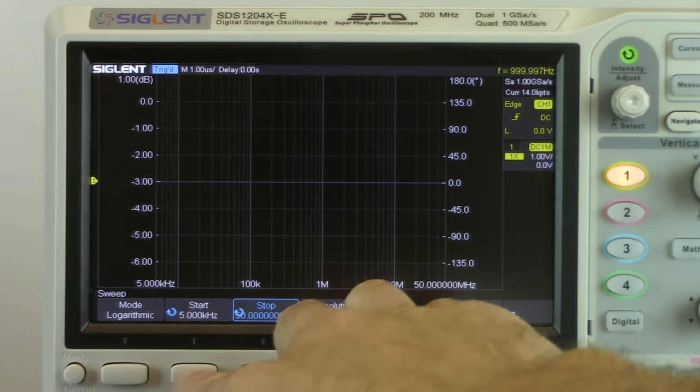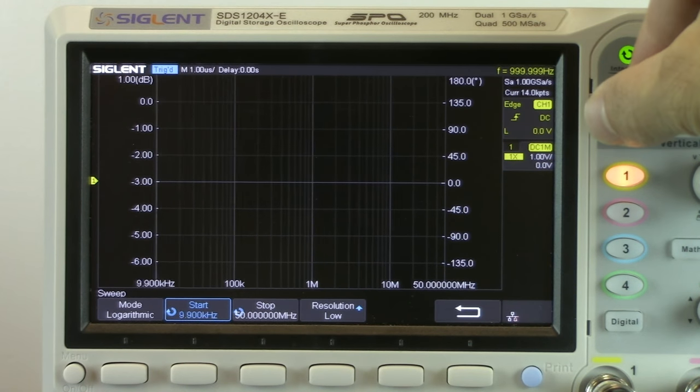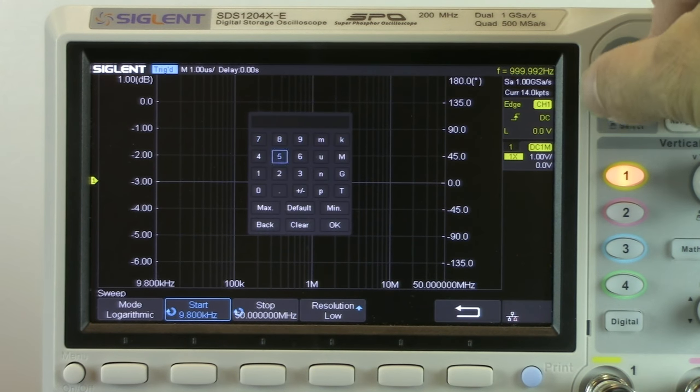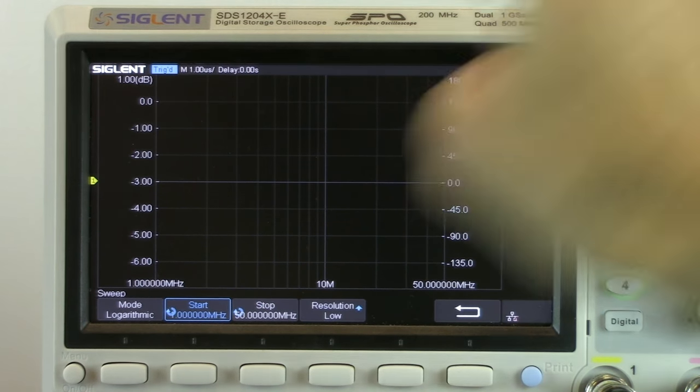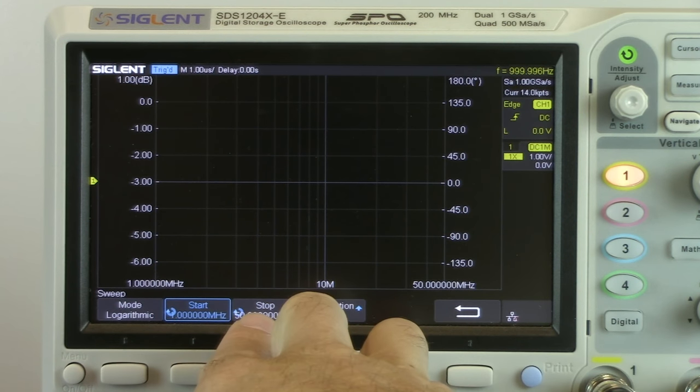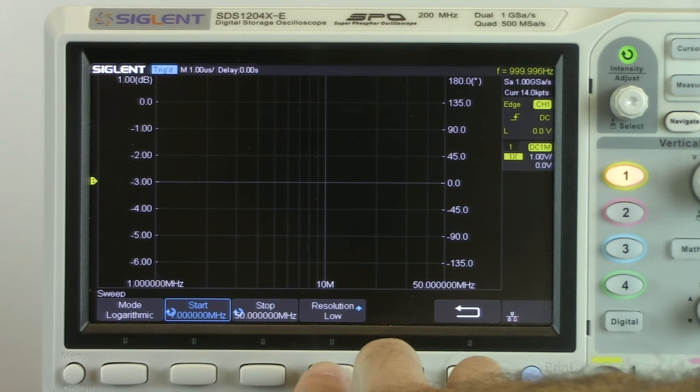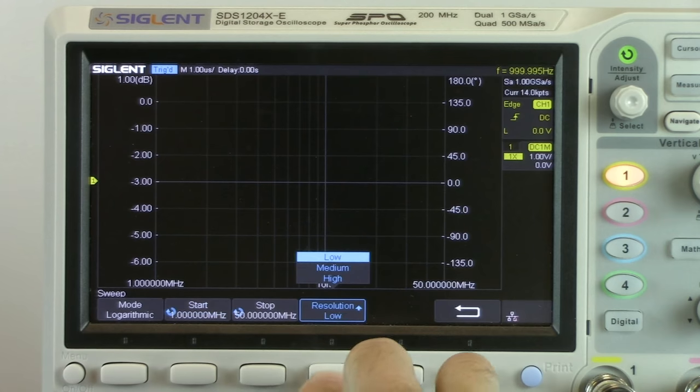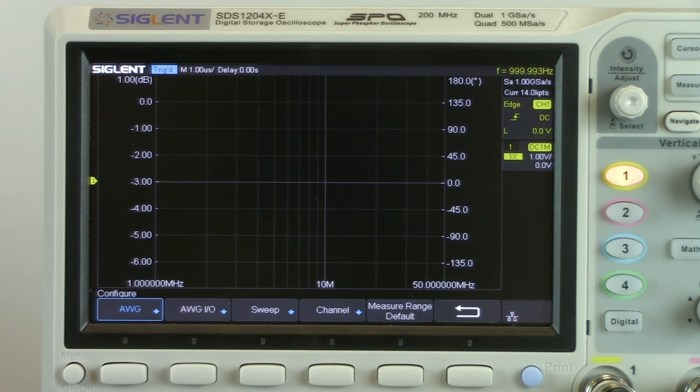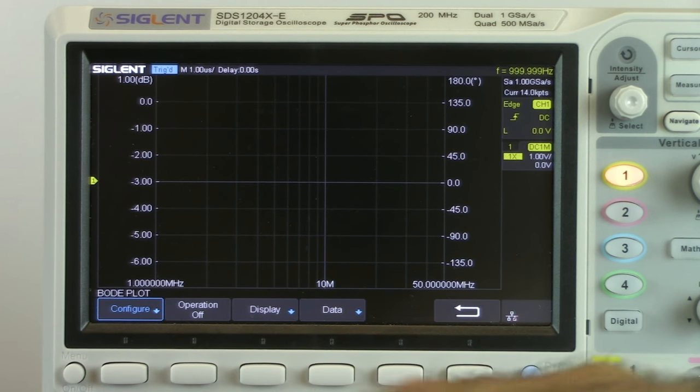And then let's change the start value. So again we can rotate it to change it or we can press it in if we're going to do larger changes. 1 meg. So we're going to do a log sweep from 1 meg to 50 meg. And we can change the resolution or the number of steps between low, medium, and high. For this test let's just do a medium. And then we can back out and back out one more time. And we should be all set ready to go with this. I'm just going to turn it on.